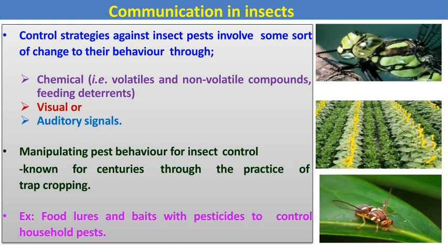Control strategies against insect pests involve some sort of change to their behavior through chemicals — volatile or non-auditory compounds or feeding deterrents — as well as visual or auditory signals. Manipulating pest behavior for control has been known for centuries through trap cropping. Examples include food lures and baits with pesticides to control household pests.